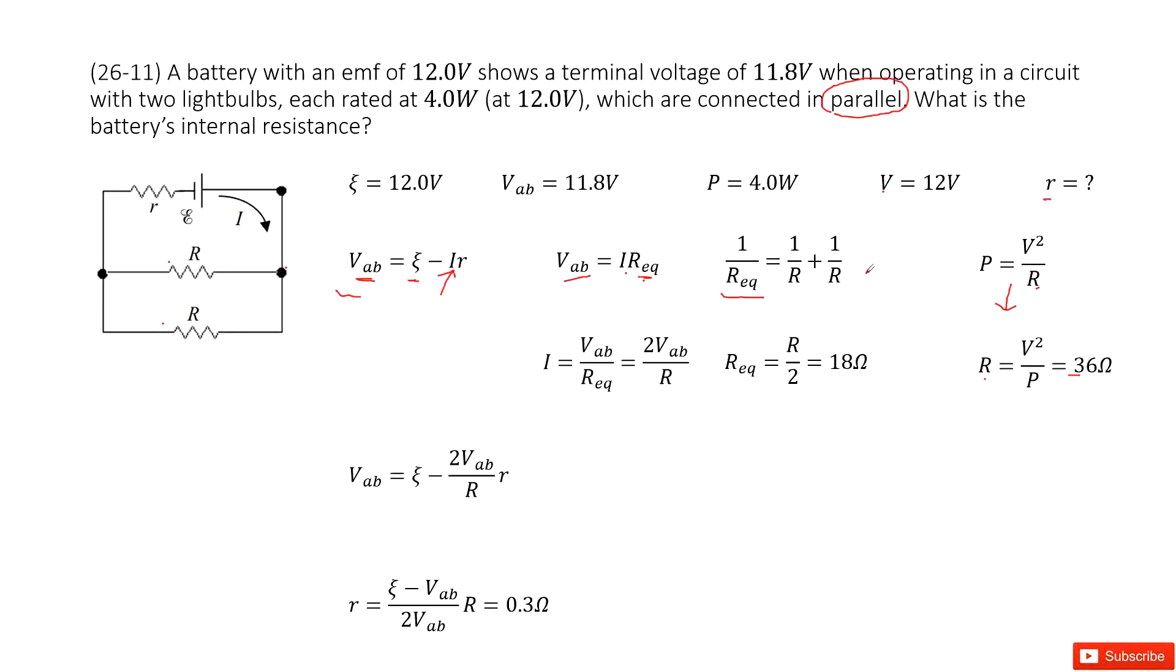For each light bulb, the resistance is 36 ohms. When we connect these two light bulbs in parallel, the equivalent resistance becomes 18 ohms. Now, knowing the terminal voltage is 11.8 volts and the equivalent resistance is 18 ohms, the current equals the terminal voltage divided by the equivalent resistance.